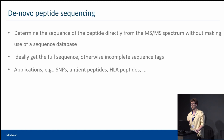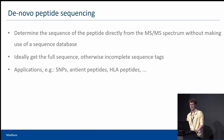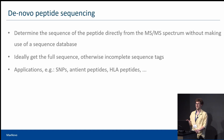De novo sequencing is useful, for example, in SNP search, HLA, ancient peptide search, or any application where it is problematic to construct a library.